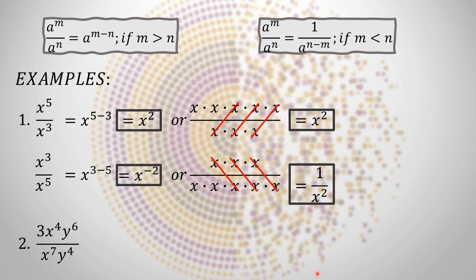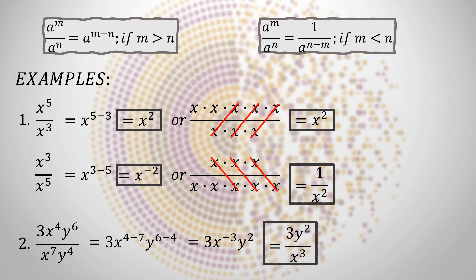Second example: 3x to the 4th power y to the 6th power over x raised to 7 y raised to 4. Since there is no numerical coefficient in the denominator, that is 1, and 3 divided by 1 is 3. Simplify: x raised to 4 minus 7 gives x raised to negative 3, and y raised to 6 minus 4 gives y squared. Since x has a negative exponent, move it to the denominator. The final answer is 3y squared over x cubed.